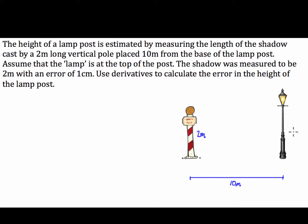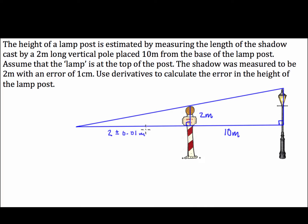We're being asked to use derivatives to calculate the error in the height of the lamp post — so we're looking for the error in Y. We have a shadow that's going to be cast, and what we're going to be able to do is create two similar triangles. In the interest of space, I've drawn the similar triangles so we can fit everything on the same page.